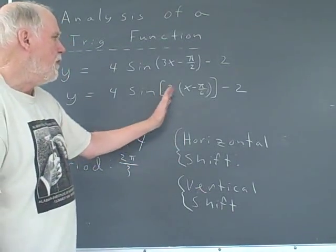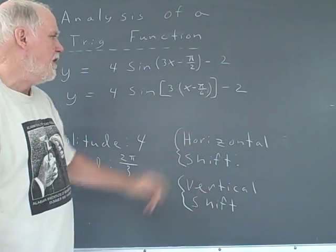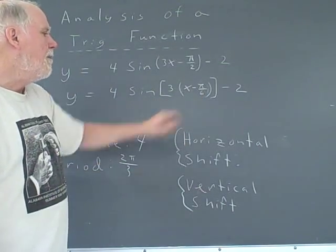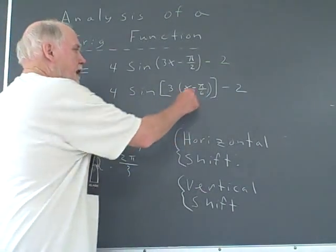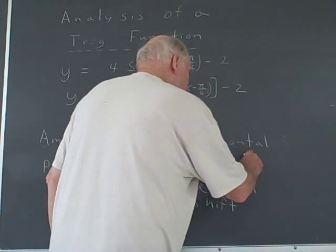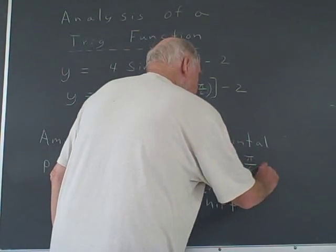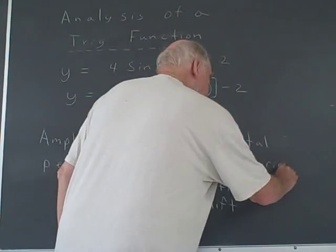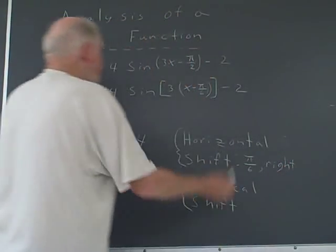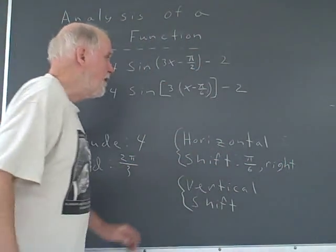The horizontal shift, or what is often known as the phase shift, it's going to move pi over 6 units to the right, in the opposite direction of the sign. Pi over 6 units to the right. In other words, the whole sine function is just going to be moved over pi over 6 units.